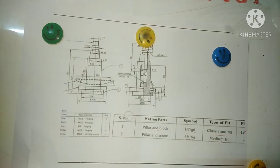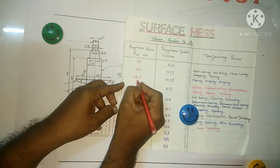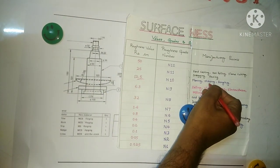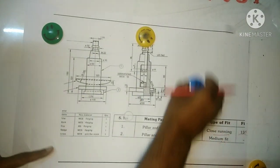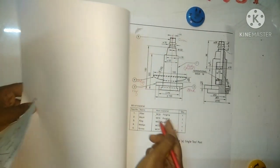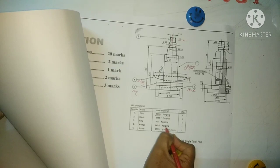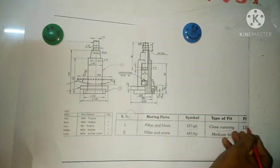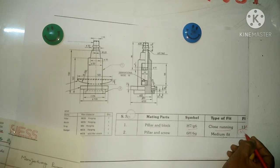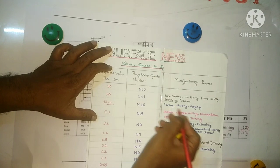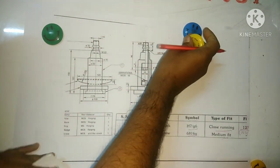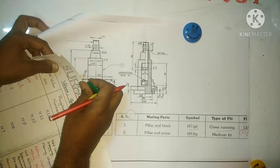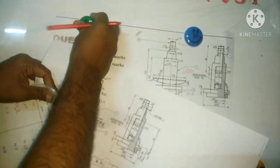For surface finish, the value written is 12.5, which comes under the N10 class. This represents the operations of planing, shaping, and forging. Looking at the bill of materials, all operations are forging, so the surface finish of 12.5 (N10 class) is easy to indicate. This completes the surface finish and also the geometrical tolerances, GD&T, fits, and surface finish section.